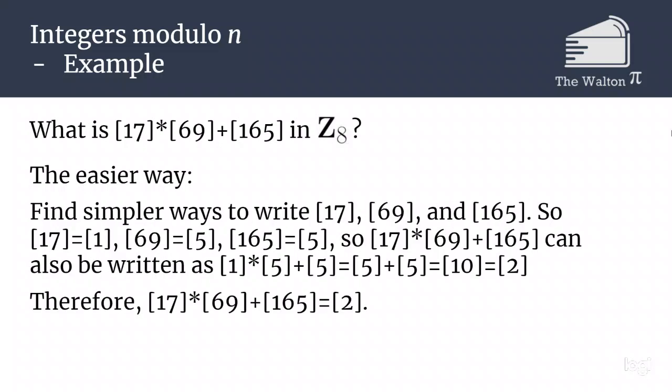So the easier way is to first replace each of the 17, 69, and 165 with a smaller and simpler representation. The class of 17 in Z mod 8 can also be written as the class of 1. The class of 69 is the same as the class of 5. And the class of 165 is also the class of 5.